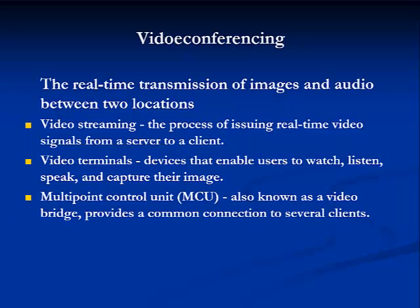Video over IP is challenged by the delay and loss characteristics of packet-switched networks. It also requires significantly more bandwidth than VOIP or FOIP. Video over IP is transmitted in three ways: point-to-point, called unicast; point-to-multipoint with user registration, called multicast; and point-to-multipoint with no user registration requirement, called broadcast.